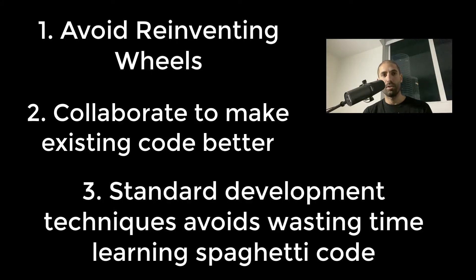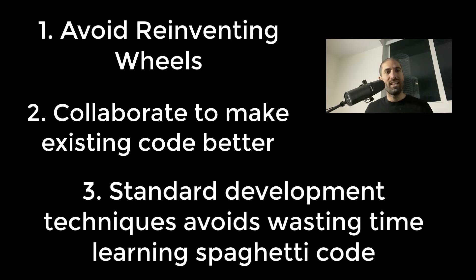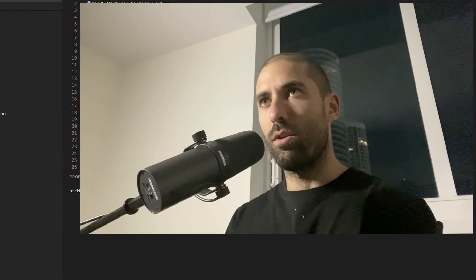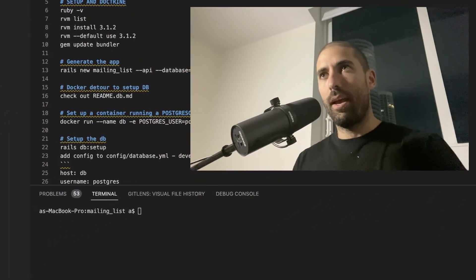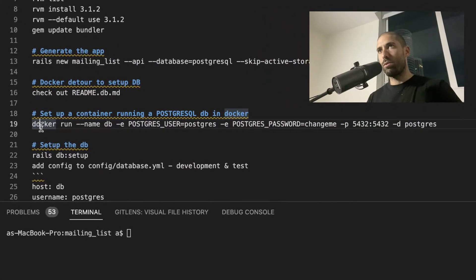The value of convention over configuration is threefold. First, it prevents you from redeveloping features that have already been developed by somebody else in the Rails community. Second, by reusing existing code, it means that the existing code gets more testing and more use, meaning that the quality of each gem becomes higher. And finally, it allows developers to easily collaborate on other Rails projects. The API for this simple mailing list will feature persistent data, so for that we will need a database.